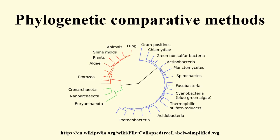Phylogenetically independent contrasts: Felsenstein proposed the first general statistical method in 1985 for incorporating phylogenetic information — the first that could use any arbitrary topology in a specified set of branch lengths. The method is now recognized as an algorithm that implements a special case of what are termed phylogenetic generalized least squares models. The logic of the method is to use phylogenetic information to transform the original tip data into values that are statistically independent and identically distributed. The algorithm involves computing values at internal nodes as an intermediate step, but they are generally not used for inferences by themselves.